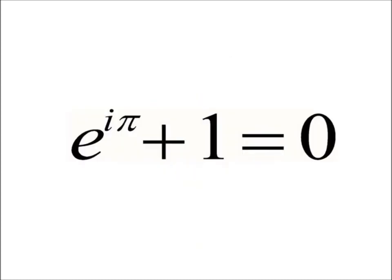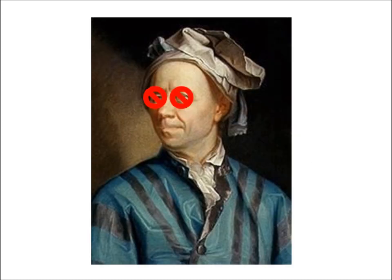Later discovers Euler's identity. At 60 a cataract and failed surgery leaves him totally blind, but he continues to prove a paper a week until his death at age 76.